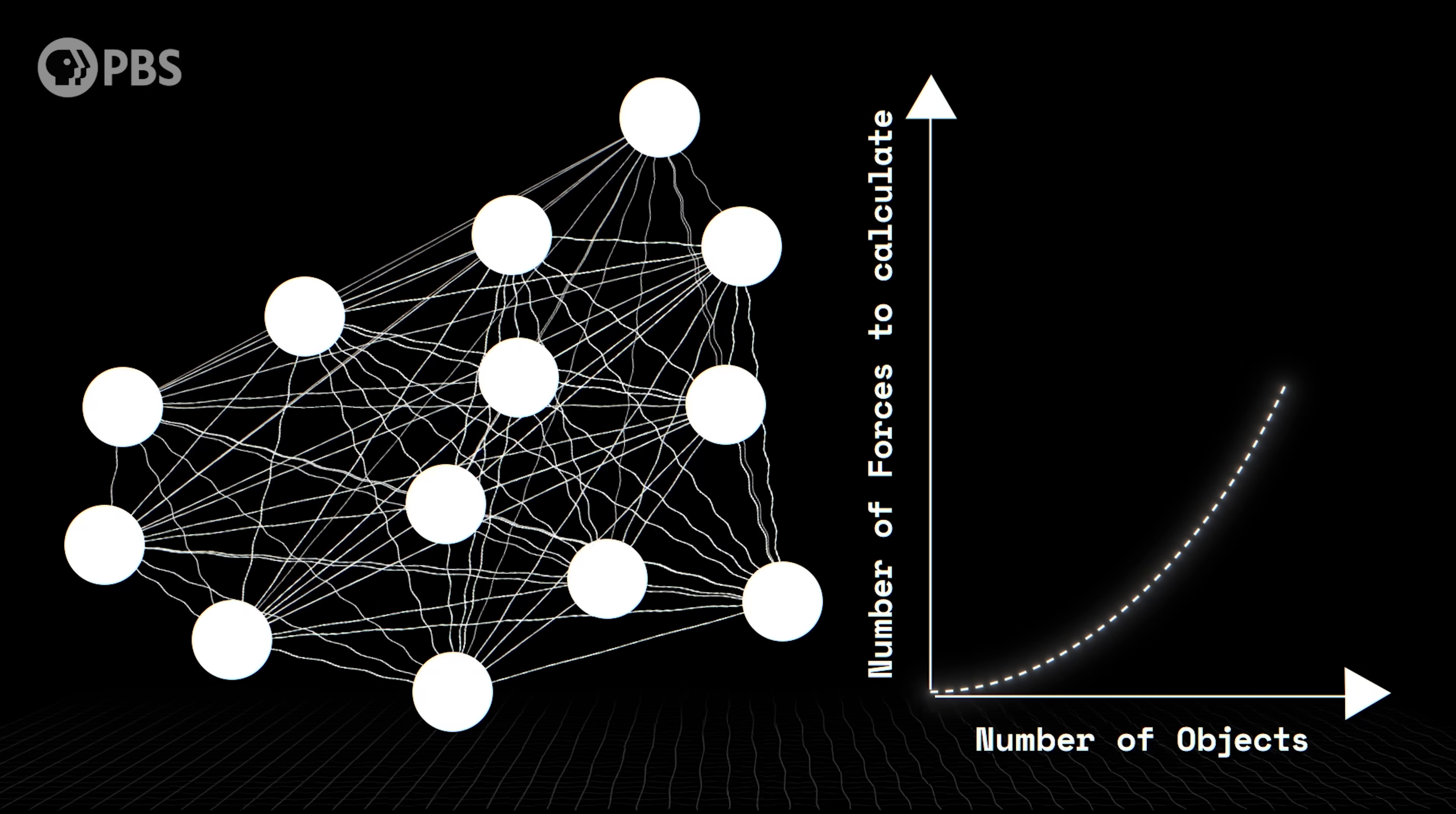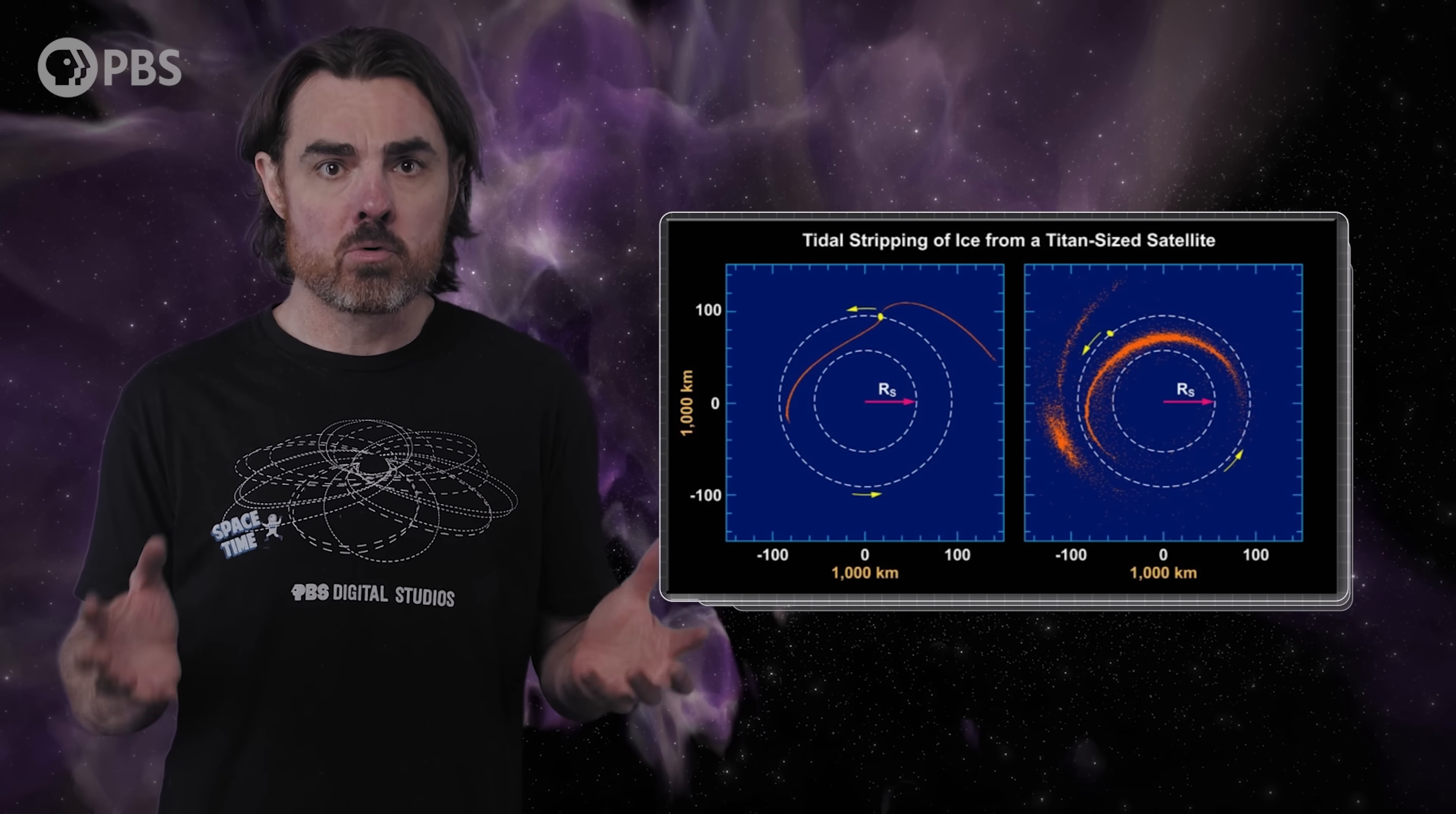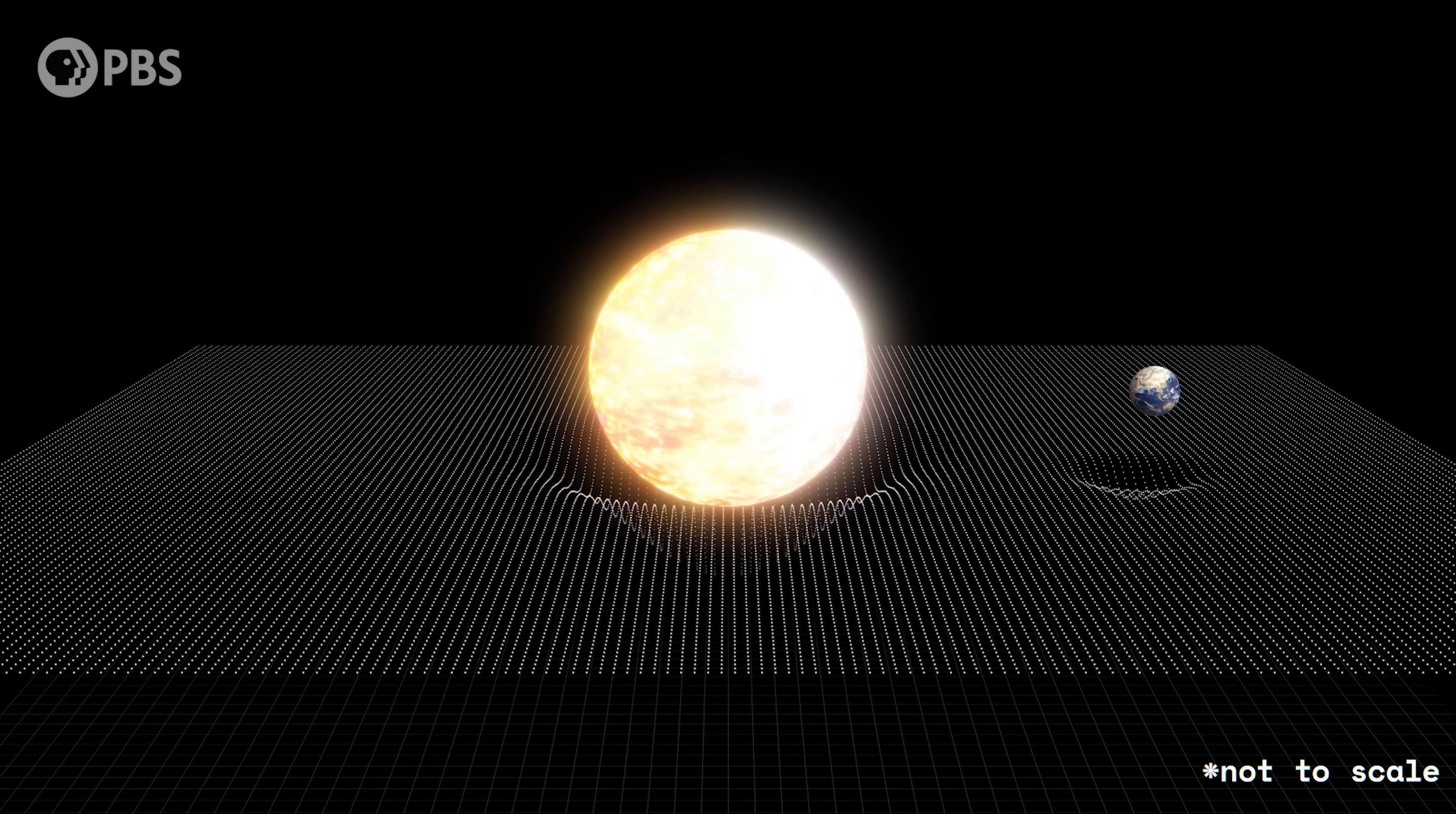But Newtonian gravity is only an approximation of how gravity really works, an approximation valid when gravity is weak. That's fine for most of the universe, and even for mild tidal disruption events like the one that may have torn apart a moon to form Saturn's rings. But to properly describe a TDE near a black hole, we need the full theory, and that's Einstein's general theory of relativity. Rather than describing gravity as a force, general relativity, or GR, describes the warping of space and time by massive objects, and explains gravity as the effect of that warping on the motion of objects.